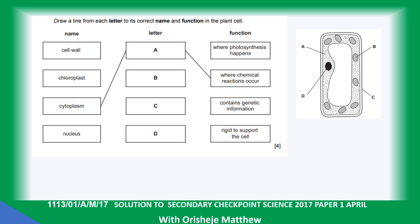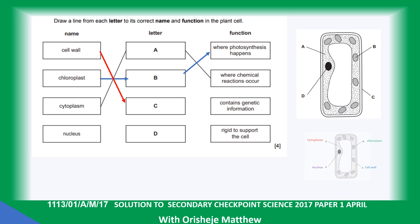For each part of the plant cell, we identify the function. Chloroplasts produce chlorophyll to make food and help photosynthesis take place. The cell wall provides rigidity, helping the plant cell to be rigid. The nucleus contains the genetic material.